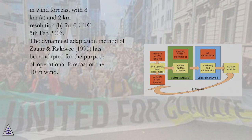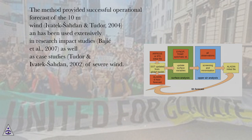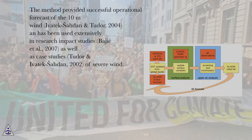This is shown in wind forecasts with 8 kilometers and 2 kilometers resolution for 06 UTC, 5 February 2003. The dynamical adaptation method of Zagar and Rukavec (1999) has been adapted for the purpose of operational forecast of the 10-meter wind. The method provided successful operational forecast of 10-meter wind (Ivatek-Saden and Tudor, 2004) and has been used extensively in research impact studies (Bajic et al., 2007) as well as case studies of severe wind (Tudor and Ivatek-Saden, 2002).